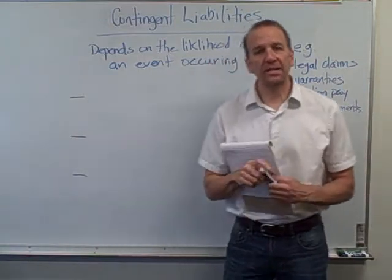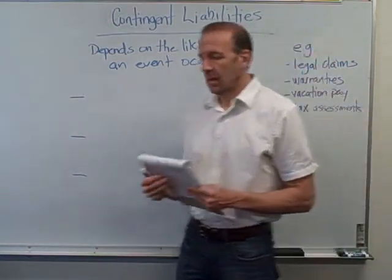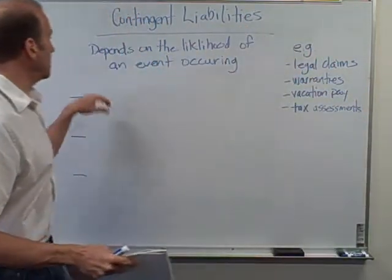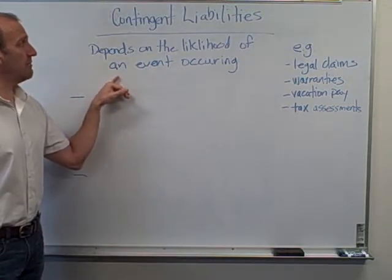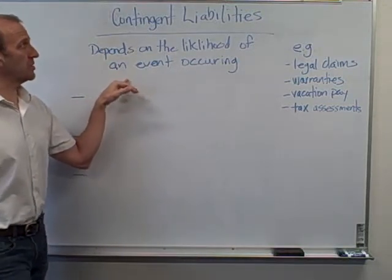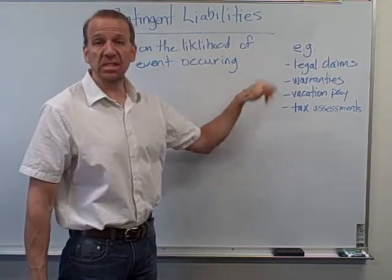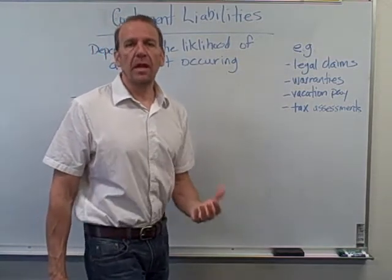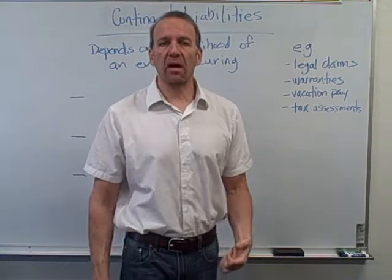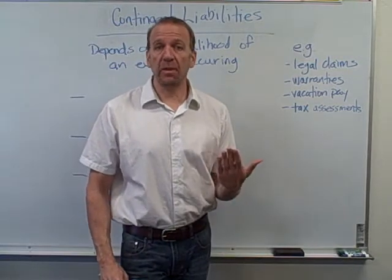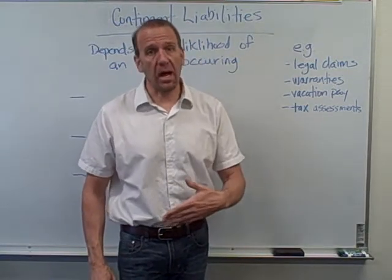We're going to look at contingent liabilities now. A contingent liability, as it sits here on the board, depends on the likelihood of an event occurring. Some examples might be legal claims. If someone sues us and the case is still going on, it's a contingent liability — we might owe somebody money, but then we might not.